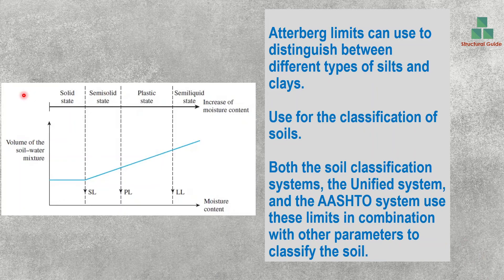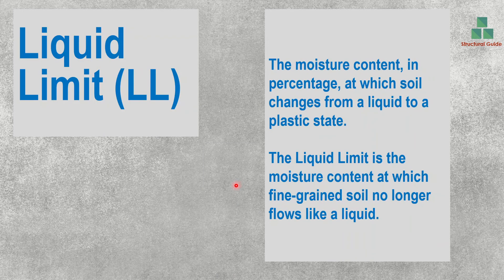As you can see here, these are the different stages of the soil. These stages and their boundaries are called the Atterberg Limits: Liquid Limit, Plastic Limit, and Shrinkage Limit. We identify these limits at the border positions where the state of the soil changes.